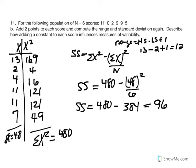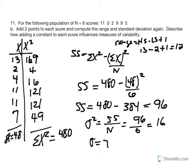We just shifted this distribution upward by adding a constant to every score, which has no effect on the spread or deviation between scores and the mean. To end these problems, I want to provide rules for determining the effects on mean and standard deviation when you add, subtract, multiply, or divide by a constant.